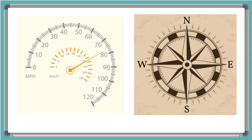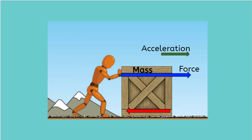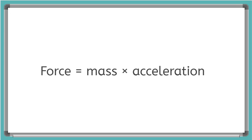Do you remember what happens when an object experiences an unbalanced force? That's right — we'll have a change in speed or direction, which means a change in velocity. We define a change in velocity as acceleration. Now there's a very special relationship between an object's mass, force, and acceleration: the force applied to an object is equal to the mass of the object times its acceleration.